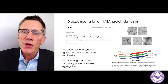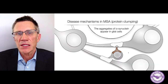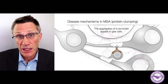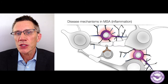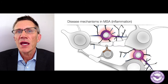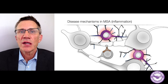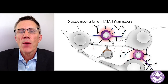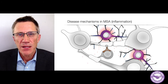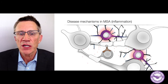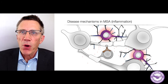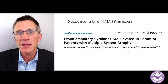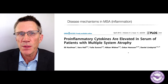Not only do aggregates appear in glial cells in MSA, but other things happen too. The immune cells called microglia, depicted in purple here, become activated. They release pro-inflammatory mediators — things that cause inflammation in the brain. It's even possible to measure these pro-inflammatory mediators or cytokines in the serum of people with MSA.